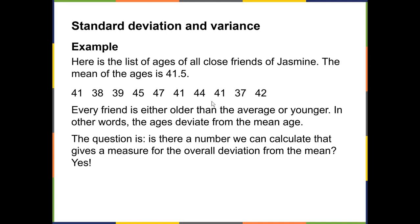We're going to start with an example. Here's a list of all the close friends of Jasmine. The mean of their ages is 41.5, but you can see no one is exactly 41.5. They're either older or younger than the average. So what we're going to do is we're going to calculate deviation to get us a feel for how spread out the data is.